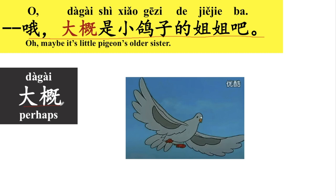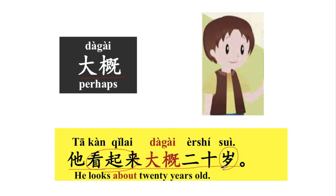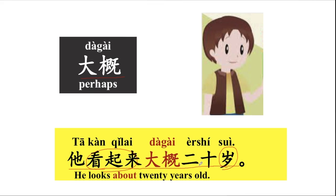大概，大概就是perhaps, maybe. 大概。好，那我可以说，他看起来大概二十岁。He looks about twenty years old. 好，那我们来看一下看起来。看起来就是look like. 岁就是years old. 二十岁，twenty years old. 他看起来大概二十岁。